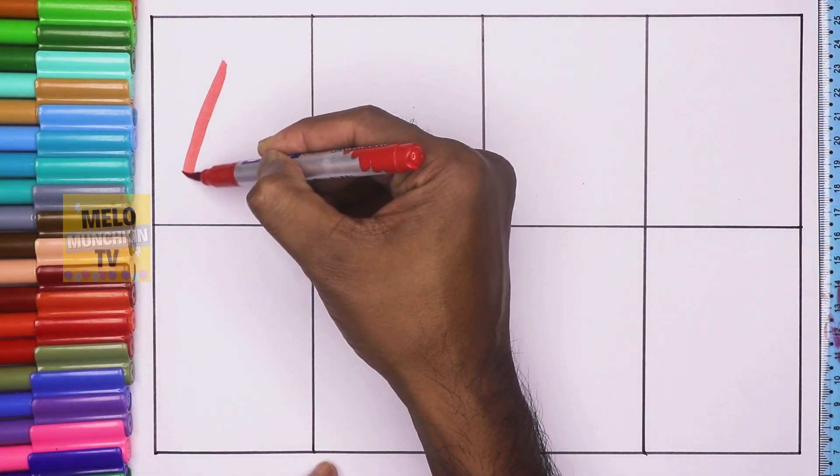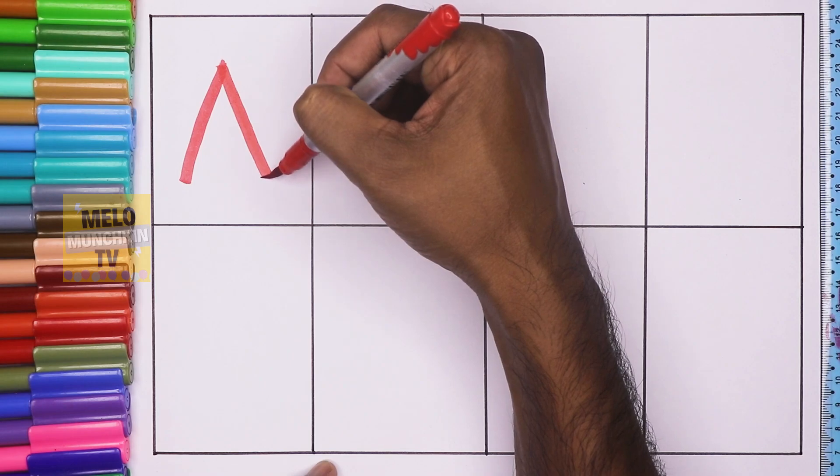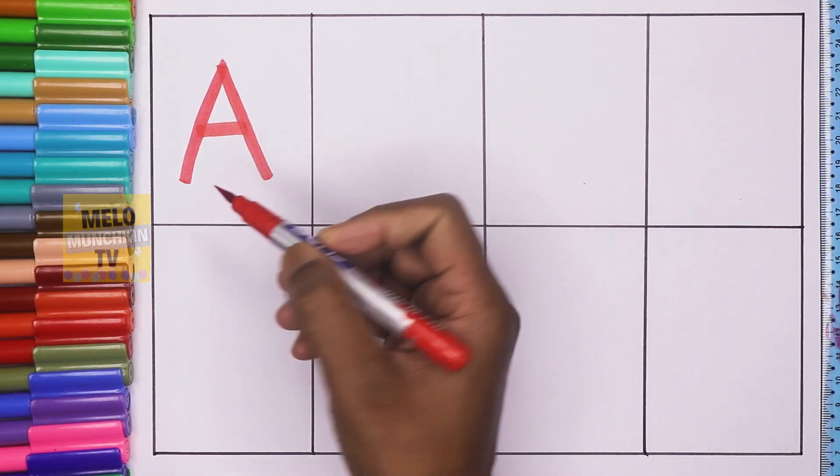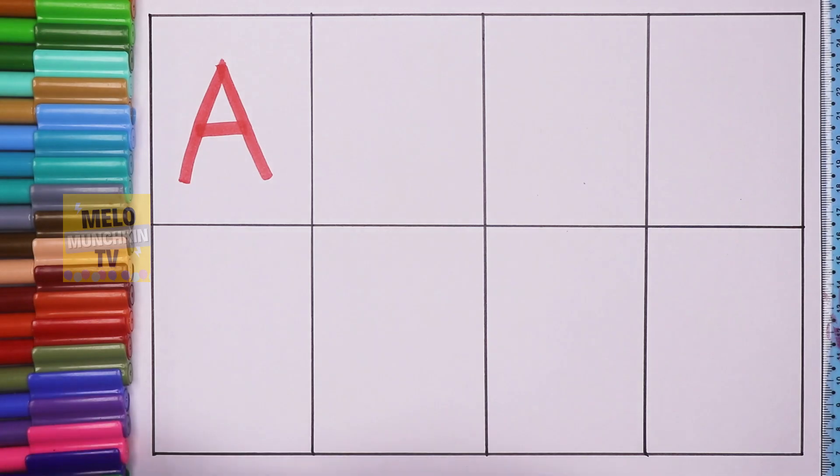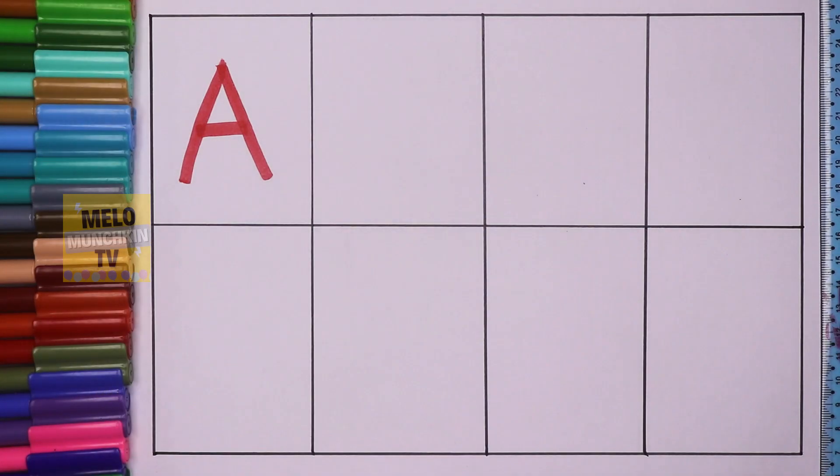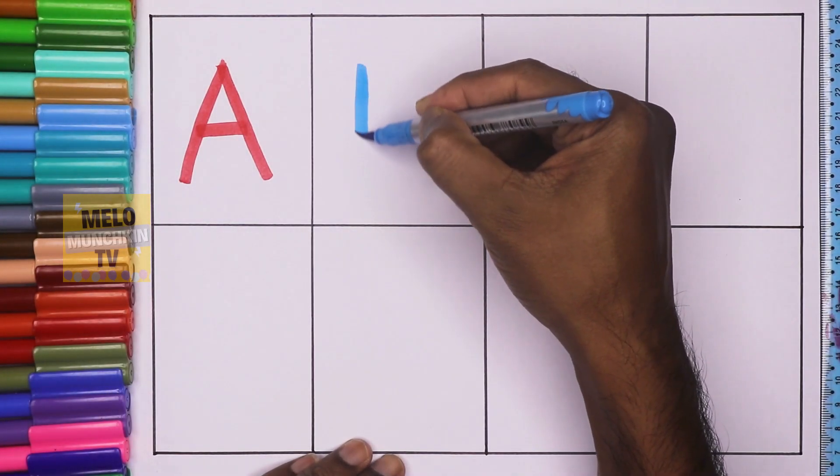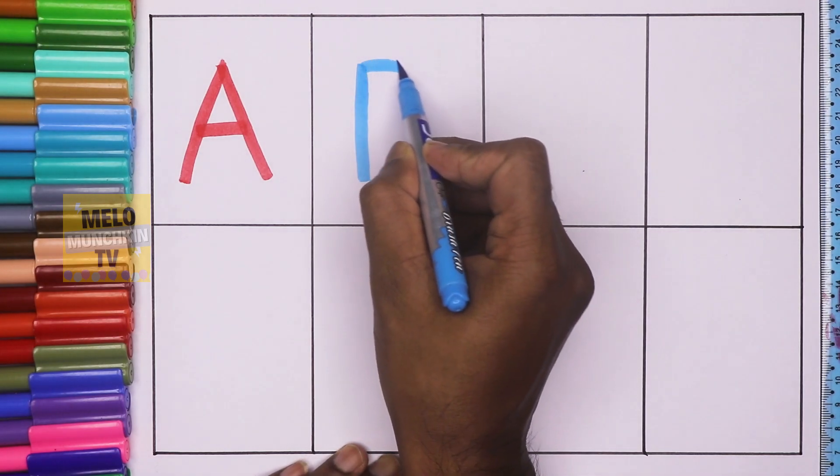A. A for apple. Blue color. B. B for ball.